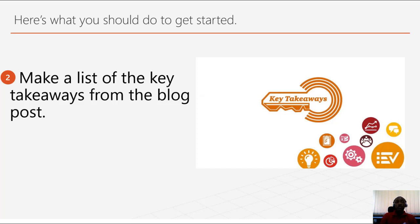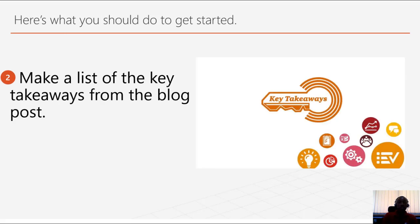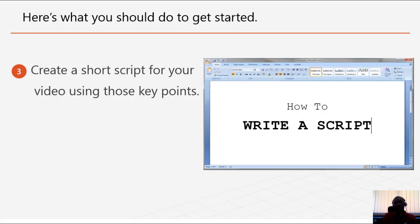Secondly, make a list of the key takeaways from the blog post. Sometimes a blog post might have over a thousand words, and a video with that much content will become boring for your viewers and they might not continue watching. So just take a few key points from your blog post to convert into a high-engaging video. Then third, create a short script for your video using those key points.